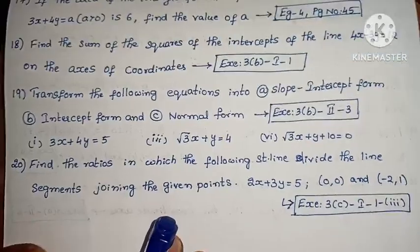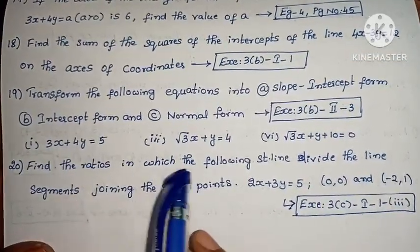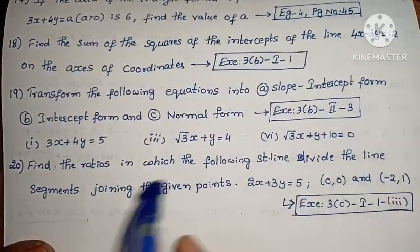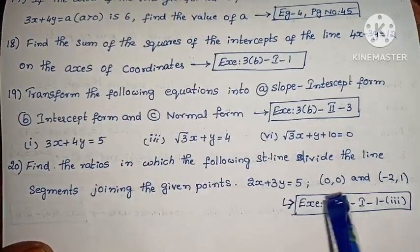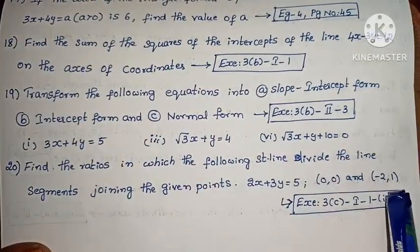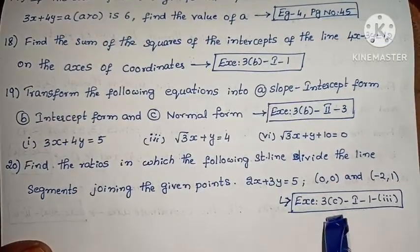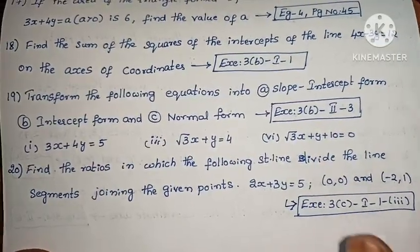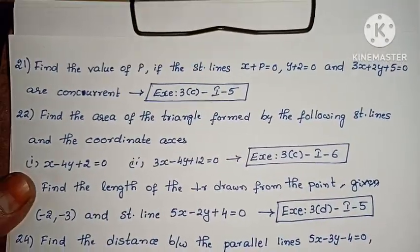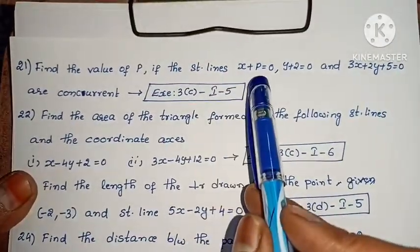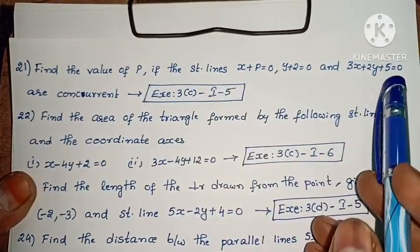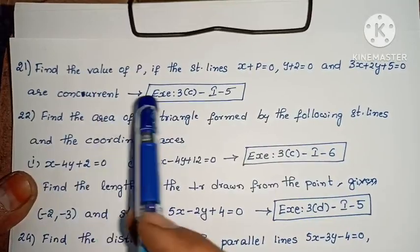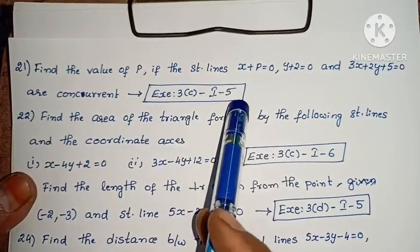Very important problem. Next, find the ratios in which the following straight lines divide the line segment joining the given points: 2x plus 3y equals to 5, points (0, 0) and (-2, 1). Next, find the value of p if the straight lines x plus p equals to 0, y plus 2 equals to 0, and 3x plus 2y plus 5 equals to 0 are concurrent.